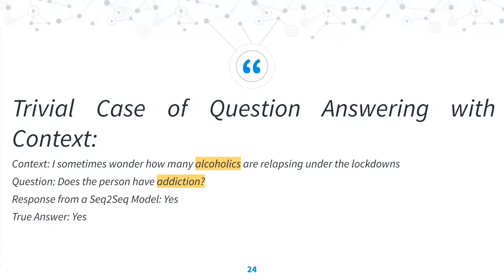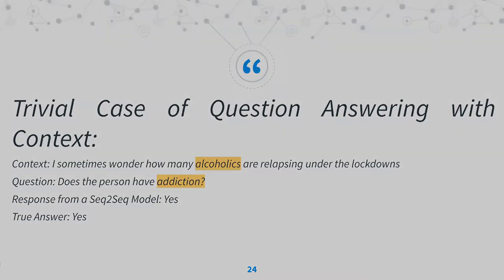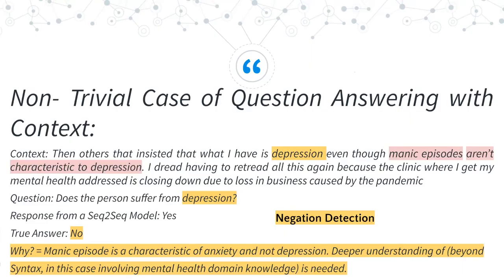Let's look at a relatively simple case of question answering. The context is: 'I sometimes wonder how many alcoholics are relapsing under lockdown.' A sequence-to-sequence model would say yes to 'does the person have an addiction' because of overwhelming co-occurrence evidence. But if you ask 'does the person suffer from depression,' the answer you'd get without knowledge would be yes — but the true answer is no. There is both a negation and the knowledge that a manic episode is a characteristic of anxiety and not depression. Deeper understanding beyond syntax, involving mental health domain knowledge, is what's necessary to answer this question well.